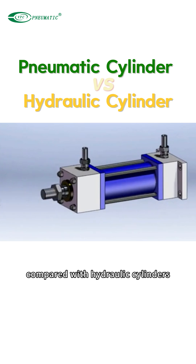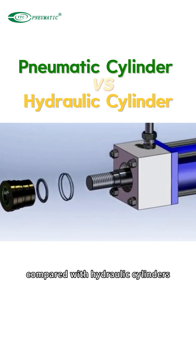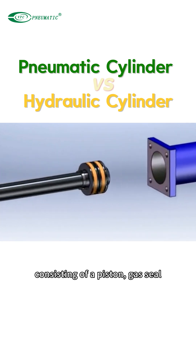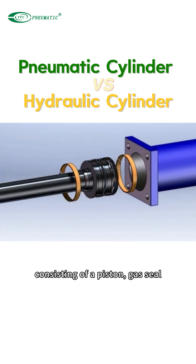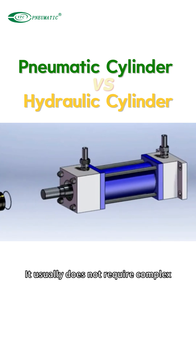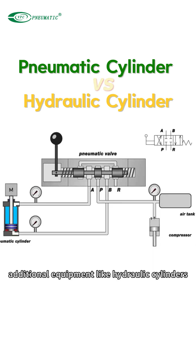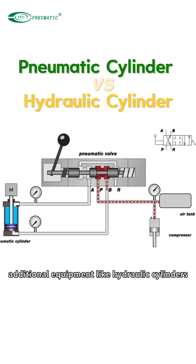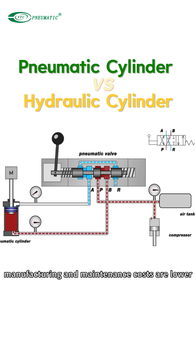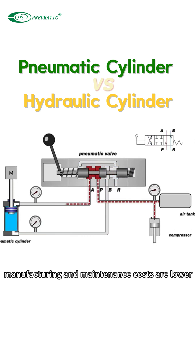Compared with hydraulic cylinders, the pneumatic cylinder structure is relatively simple, consisting of a piston, gas seal, cylinder tube, etc. It usually does not require complex additional equipment like hydraulic cylinders, so manufacturing and maintenance costs are lower.